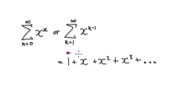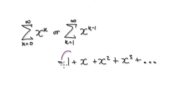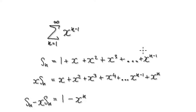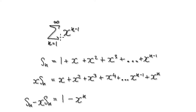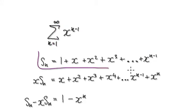Now, if you're trying to sum up all these terms from 1 all the way to infinity, in order to do that we would first need to consider summing up the first n terms. So our next thing is to try and find a formula for summing up all these terms. Let's consider summing up the first n terms, which we'll call S_n.